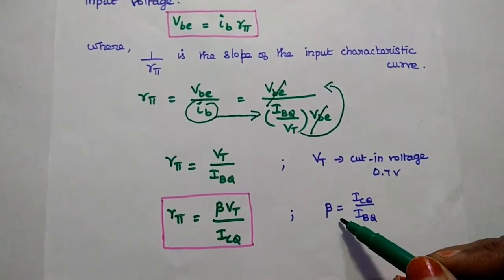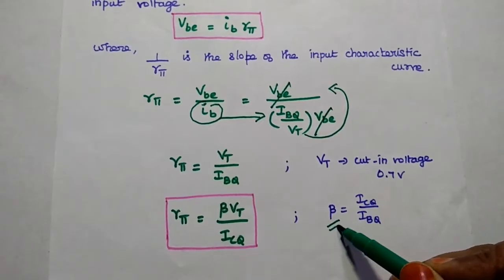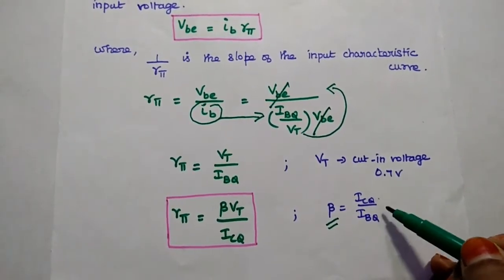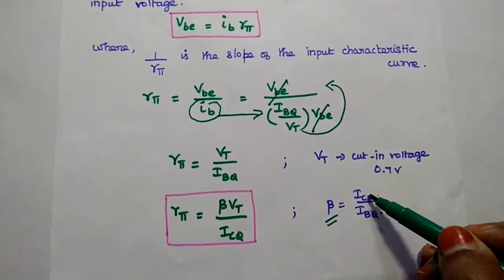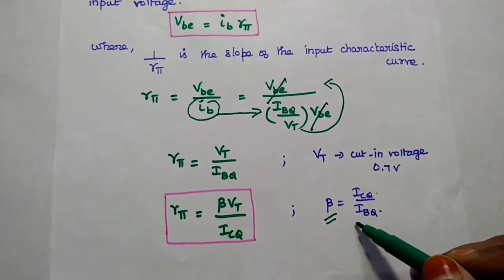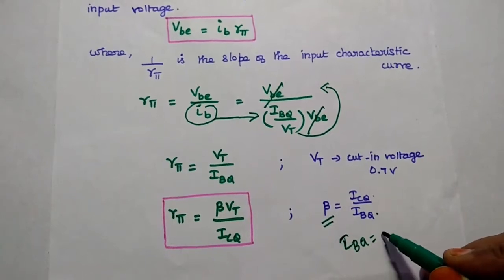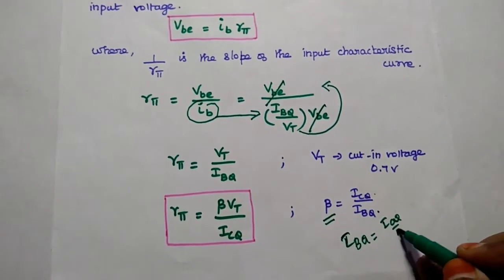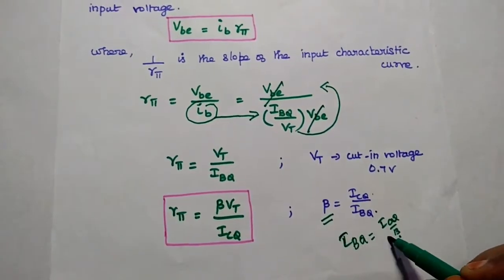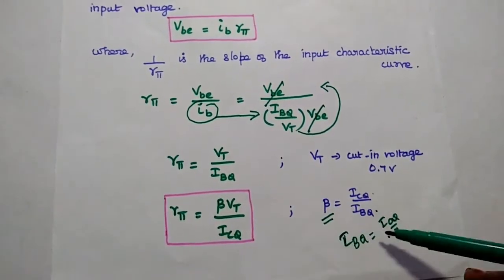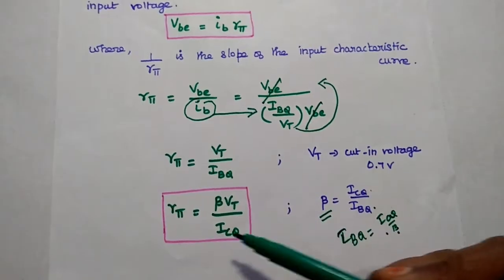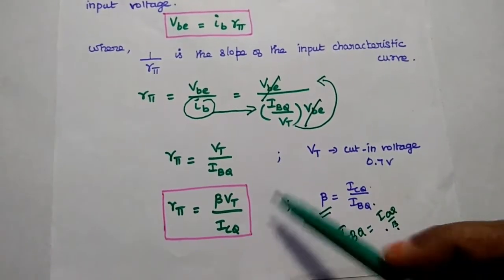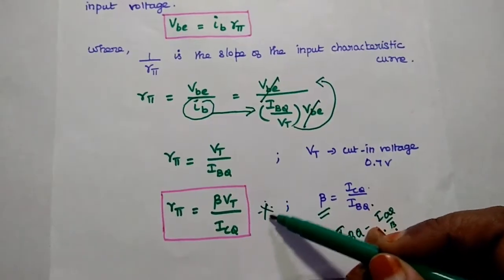As we know, the current amplification factor, or current gain beta, equals the ratio of output to input current: beta equals I_CQ divided by I_BQ. From this, I_BQ equals I_CQ divided by beta. Substituting this value, beta moves to the numerator and we get R_pi equals beta times V_T divided by I_CQ. This is the final value of R_pi.